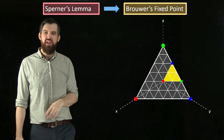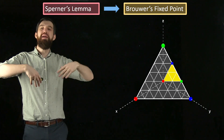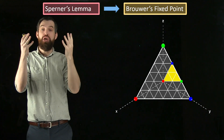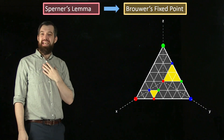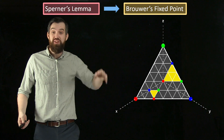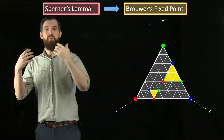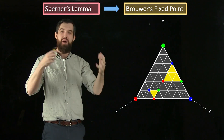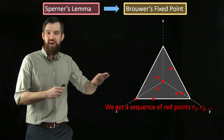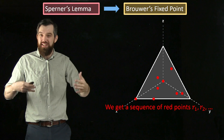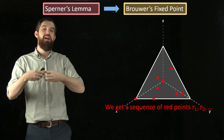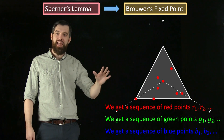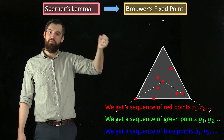Let me now sub-triangulate again — take the triangulation and make a finer one with smaller triangles. Sperner's Lemma still applies and still gives me a particular sub-triangle, but now it's a smaller one. I can keep going — smaller and smaller triangulations — and I get a sequence of little triangles that get smaller and smaller and bounce all around the big triangle. Focusing on the red points, I get an infinite sequence of red points, an infinite sequence of green points, and an infinite sequence of blue points.